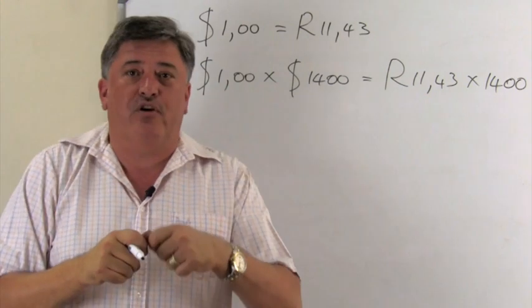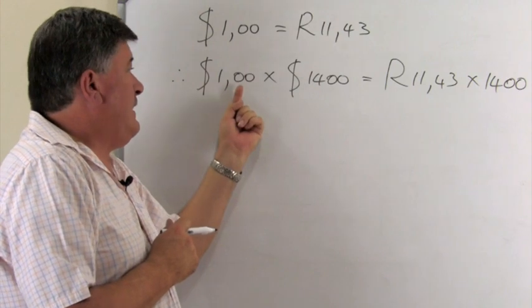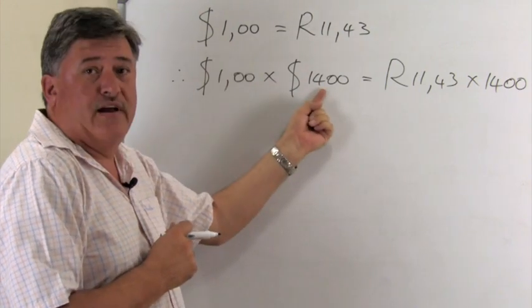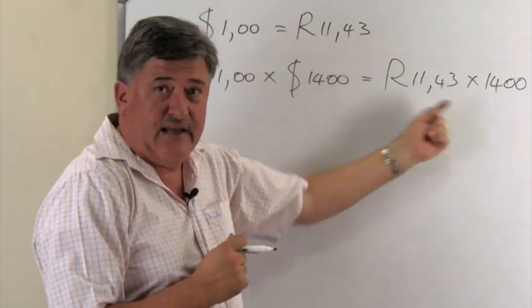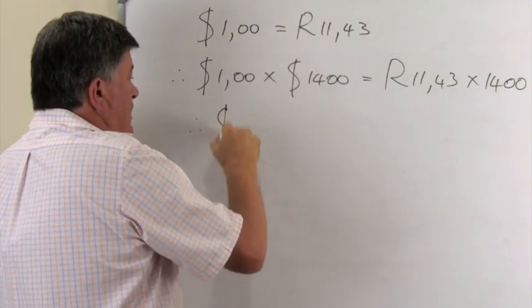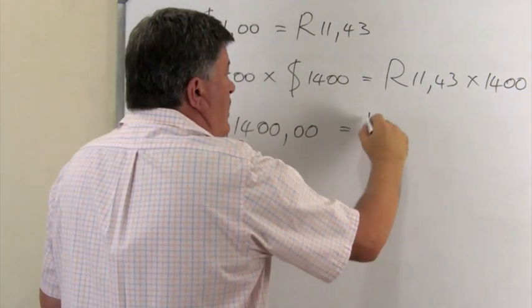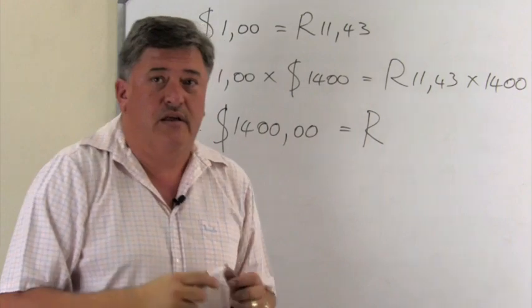Remember for every $1 you pay this. So if I multiply this $1 with the 1,400, I must do it on that side as well. So that will now say to us what the $1,400 will be in Rand.